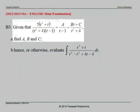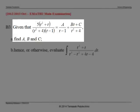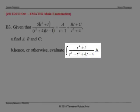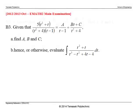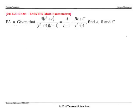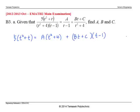This is the last question. Part A: find the unknown constants a, b, and c. Part B: evaluate the integral. For part A, let's use substitution of values. Multiplying both sides by the common denominator t squared plus 4 times t minus 1, we get an expanded equation. Since we have three unknowns, we need three equations, created by substituting three different t values. A good choice is to set the factors to zero.